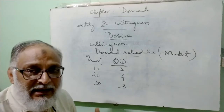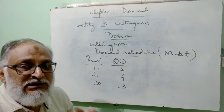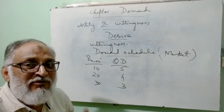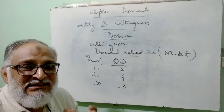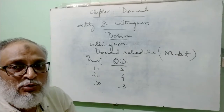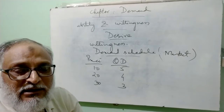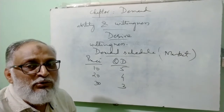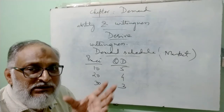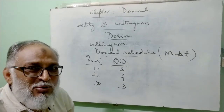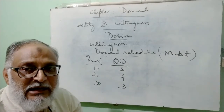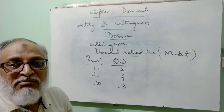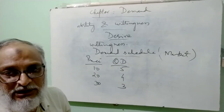As price increases, one consumer is reducing their demand. So what is the definition of market demand schedule? It is a tabular presentation of demand by several consumers at different prices. Here we have included several consumers and shown their combined demand together, related to price. That is called market demand schedule.